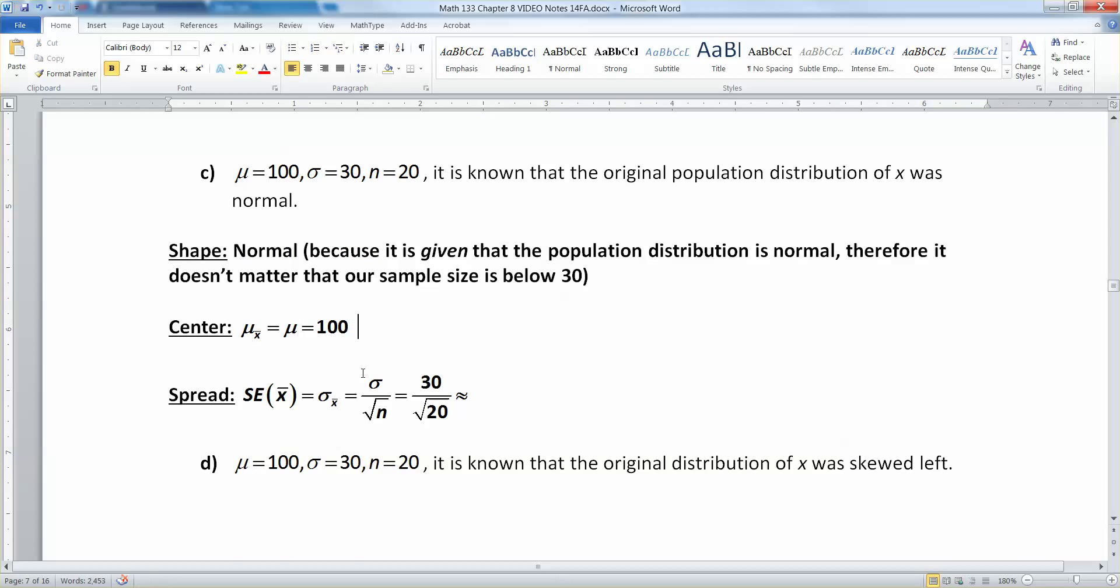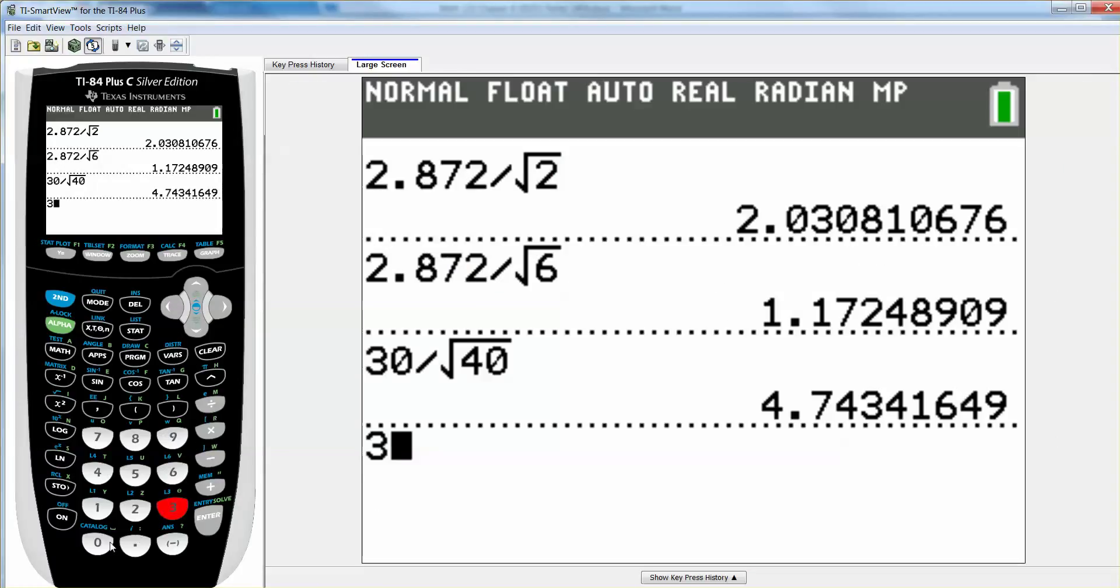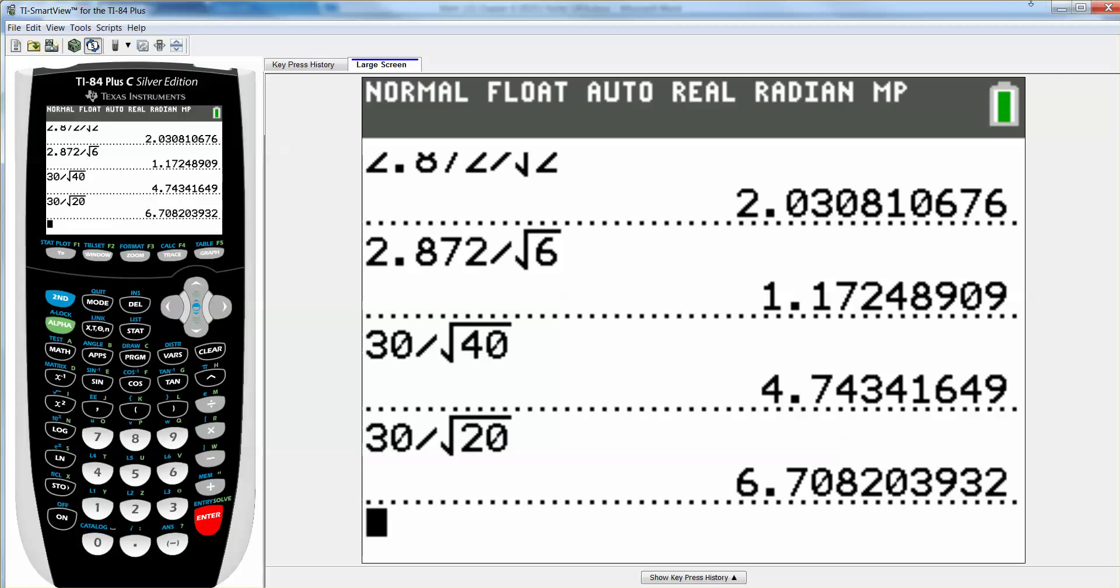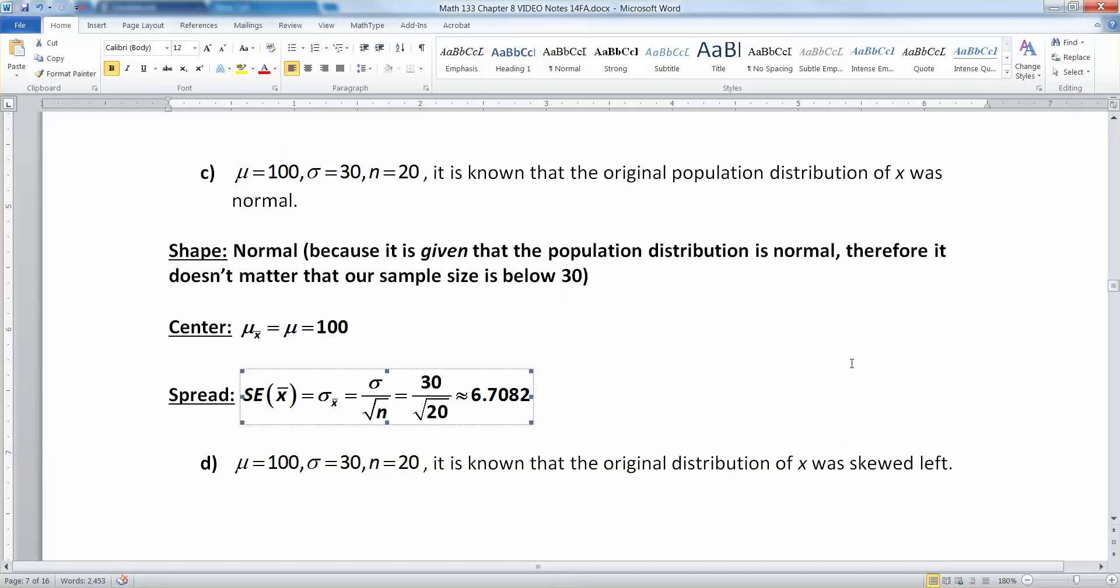The mean is still 100. The standard error is the standard deviation, which is 30, divided by the square root of n, which in this case is 20. So I'll take 30 and divide it by the square root of 20, and it's 6.7082.